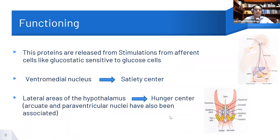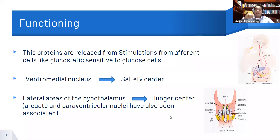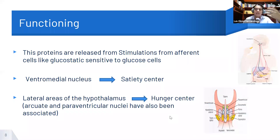Signals from glucostatic sensitive cells in the peripheral tissues are directed to the central nervous system, specifically the ventromedial nucleus and lateral areas of the hypothalamus, which have been described as a satiety center and hunger center. At this level, the signals are interpreted by the brain, and the brain makes the decision to eat or stop eating.